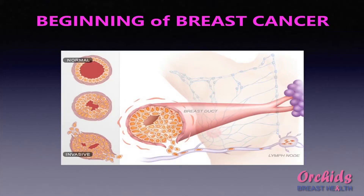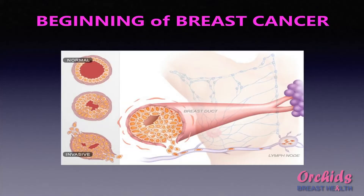When these cells break through the basement membrane and the wall of the duct, they can invade the stromal tissue — that is, the fat or fibrous tissue of the breast — and this is known as invasive cancer, or the first stage of breast cancer. Stage 0 can remain within the breast for about 8 years before it transforms into invasive cancer.